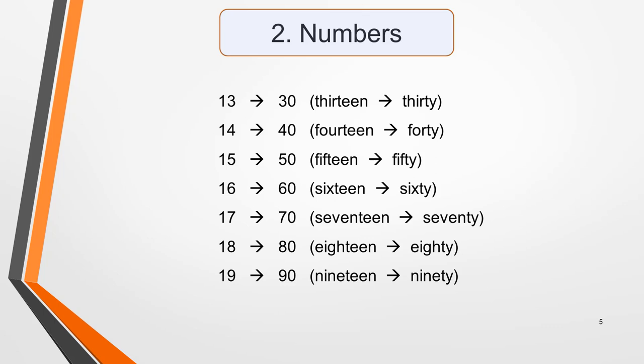Next we'll look at numbers. Numbers can come up in many different contexts, so make sure that you know how they sound and how to write them. It can be difficult to understand some numbers in certain accents, so listen to them in a range of accents as you practice your listening skills. In all accents, teens and tens numbers sound very similar and are easily confused.